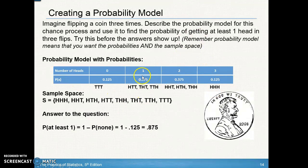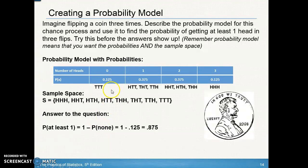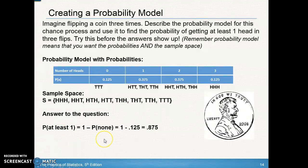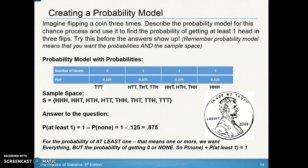The other approach is to use the complement. The complement of getting at least one head is getting none. The event plus its complement equals one, so the probability of at least one plus the probability of none equals one. Instead of adding three probabilities, it's easier to do one minus the probability of none. So the probability of at least one head is one minus 0.125, which equals 0.875.